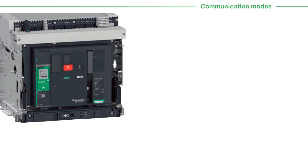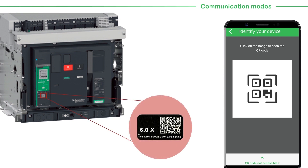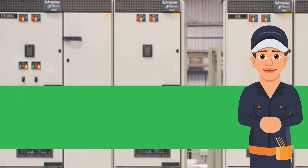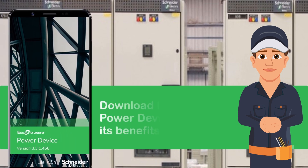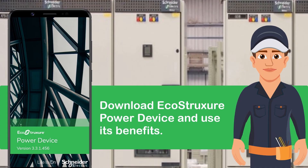There is one more way to connect to the device. From the MTZ circuit breaker, you directly scan the QR code after registration and directly the device identification screen of the MTZ app will appear. I have already started using this app. Go ahead and download this app and use its benefits. Thanks for watching.